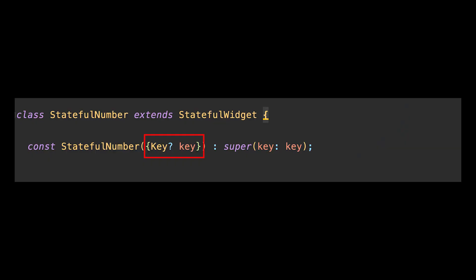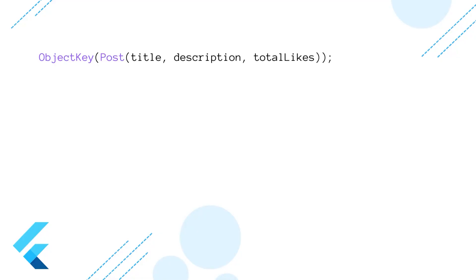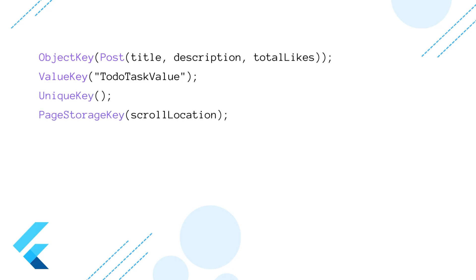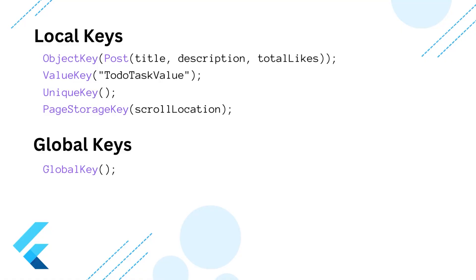What is a key in Flutter? What does that key mean in the widget constructor? In simple words, a key is an object used to uniquely identify a widget in the widget tree. In Flutter, keys are used in different aspects — for example, to preserve the scroll location in a scrollable view such as GridView or ListView, and keys can also be used to preserve state when widgets move around in the widget tree. Keys are divided into two groups: local keys and global keys.